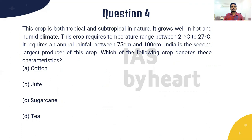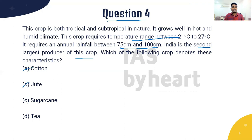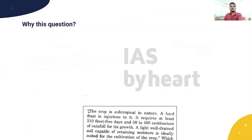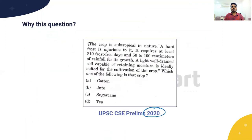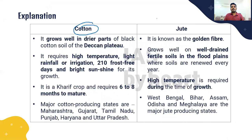Fourth question: this crop is both tropical and subtropical in nature, grows well in hot and humid climate, requires temperature between 21°C to 27°C, requires annual rainfall between 75 to 100 centimeters, and India is the second largest producer of this crop. Which of the following crops denotes these characteristics? Options: A) Cotton, B) Jute, C) Sugarcane, D) Tea. This question has been taken from NCERT's 'India: People and the Economy' book.